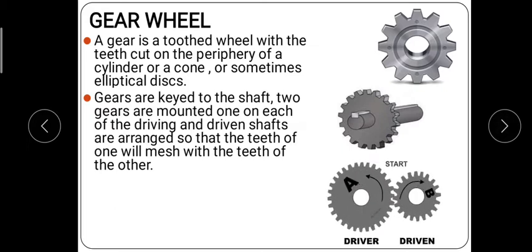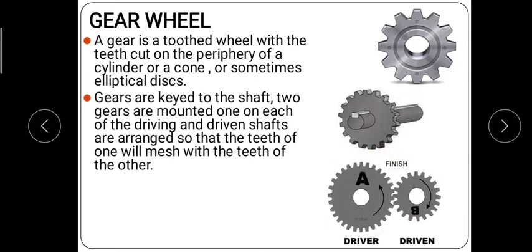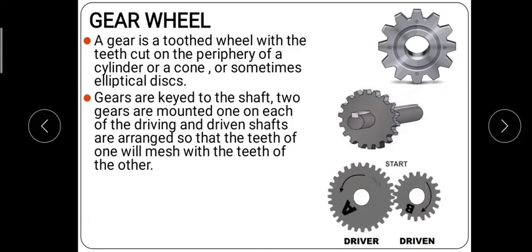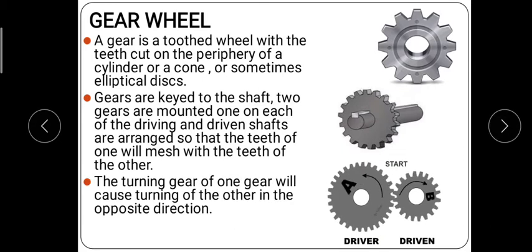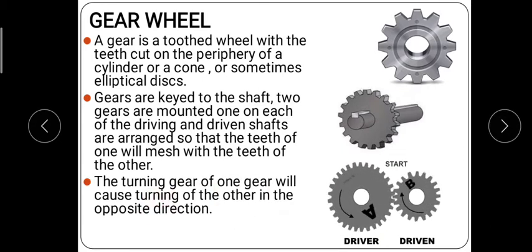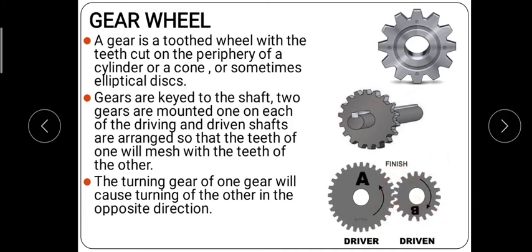You can see in the graphics that gear A is moving in one direction and gear B is moving in the opposite direction — these are the driver and driven gears moving in opposite directions. In this way, power is transmitted: one gear is connected to the driving shaft and the other to the driven shaft. The turning of one gear will cause turning of the other in the opposite direction.